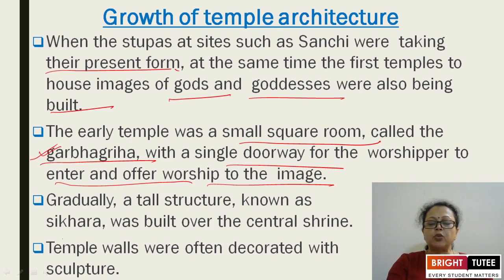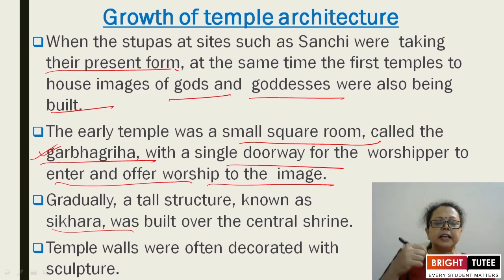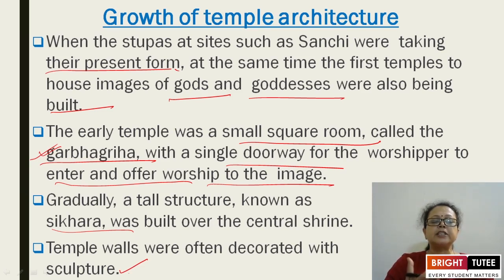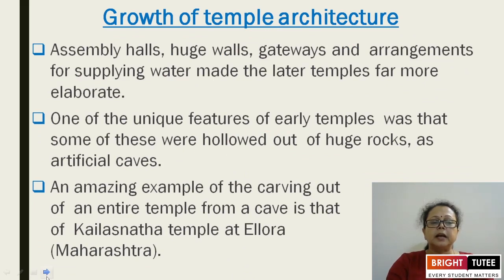Gradually, a tall structure known as the Shikhara was built over the central shrine — the Garbhagriha — creating a mountain-like structure at the top. The temple walls were often decorated with sculptures. Assembly halls, huge walls, gateways, and arrangements for supplying water made later temples far more elaborate.